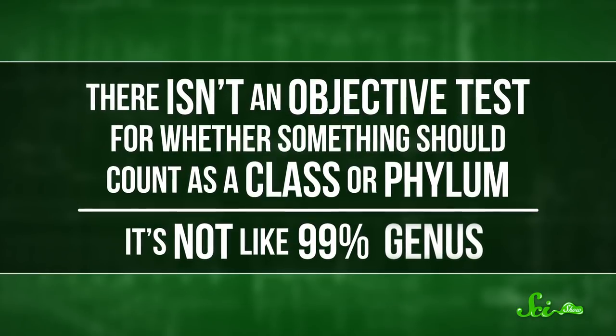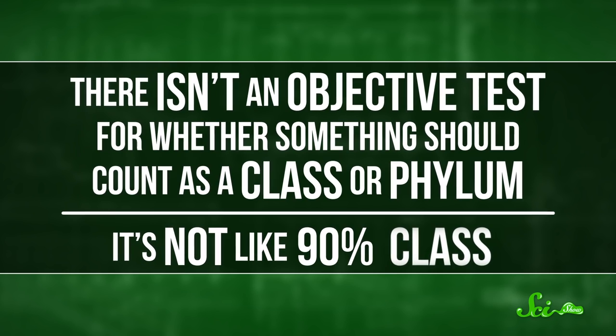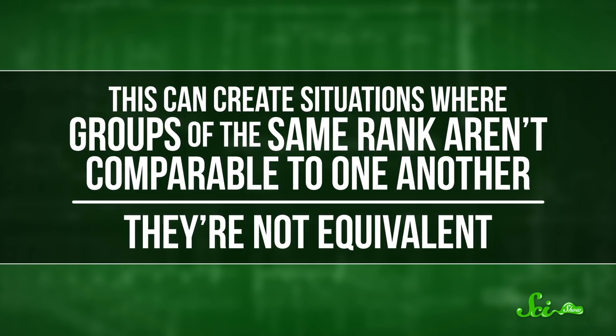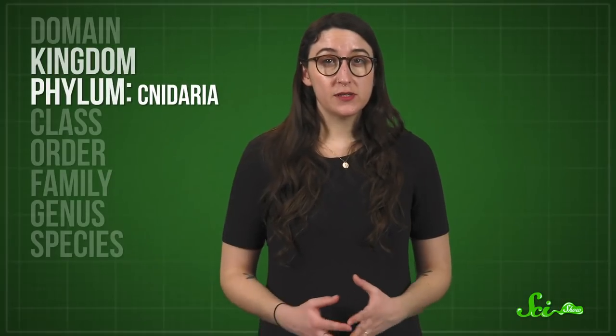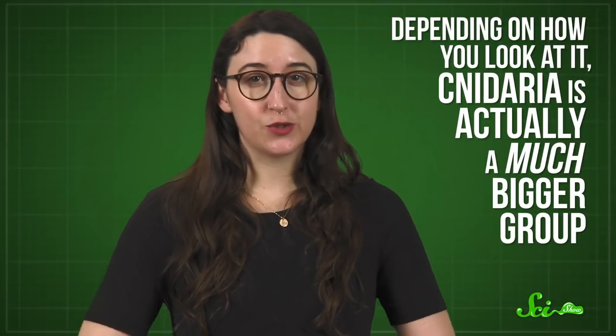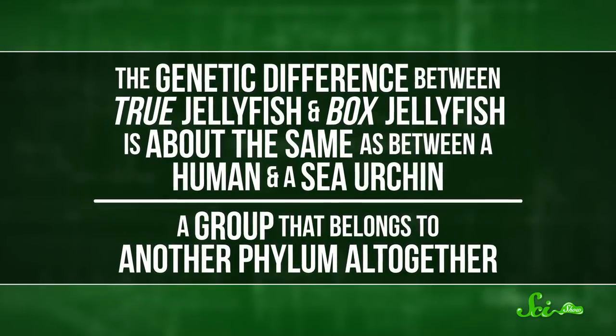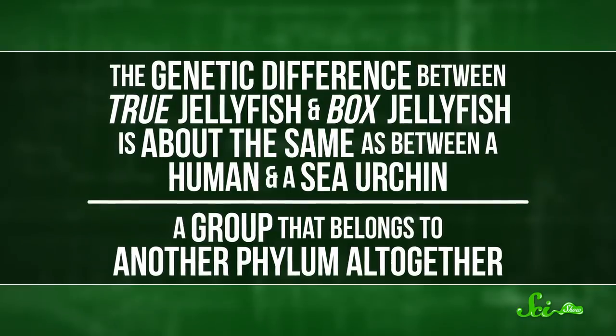That's because there isn't an objective test for whether something should count as a class or phylum. It's not like a 99% DNA match is a genus, 95% is a family, 90% is a class, etc. This can create situations where groups of the same rank aren't comparable or equivalent to one another. Take Cnidaria, a group that includes critters like jellyfish and coral. Cnidaria is a phylum, a high-level rank just below kingdom. As vertebrates, our phylum is Chordata. And since they're both phyla, you might be tempted to think of them as roughly equal — maybe the groups are roughly as old, or contain about the same genetic diversity, or the same number of species. But depending on how you look at it, Cnidaria is actually a much bigger group. In fact, the genetic difference between true jellyfish and box jellyfish is about the same as between a human and a sea urchin — a group that belongs to another phylum altogether. So again, for a system that's supposed to help us understand the world, it's got some serious flaws.